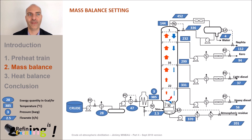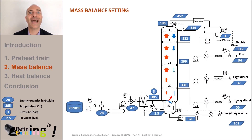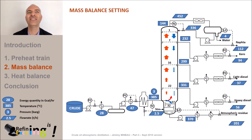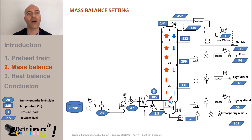Let's start with the naphtha. This naphtha cut, after debutanization, will produce high octane gasoline in a reforming unit. Note that the reforming unit catalyst does not appreciate high distillation endpoints. This may limit the amount of naphtha withdrawn from the atmospheric tower. In fact, if we increase the naphtha rate, it will become heavier and this can affect reforming unit performances.